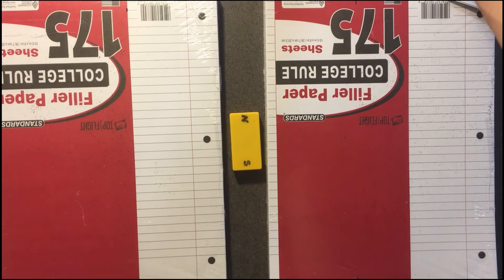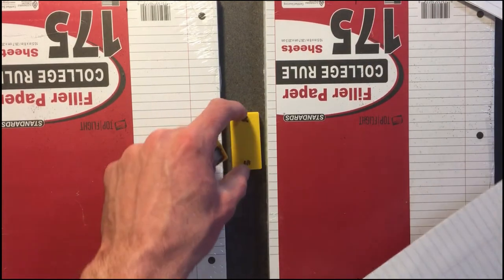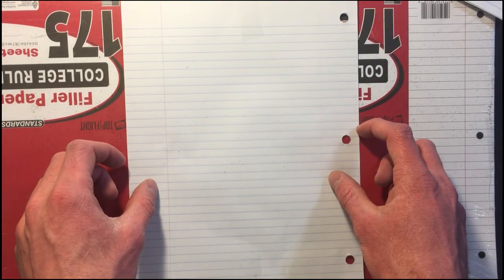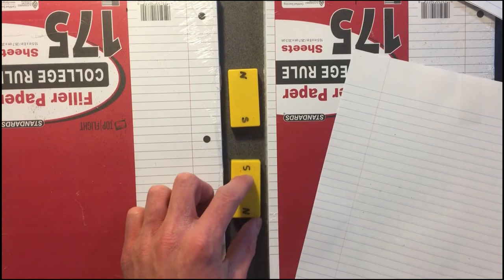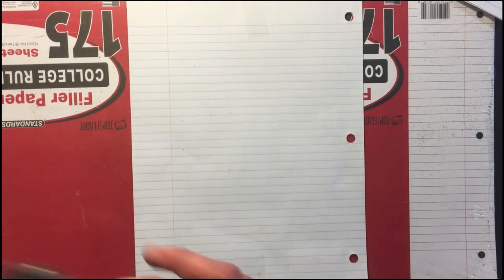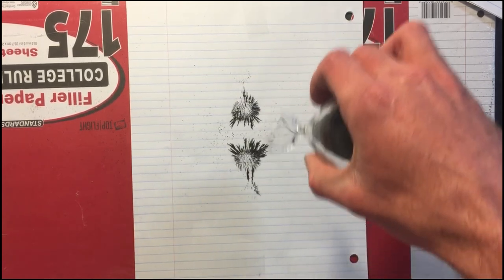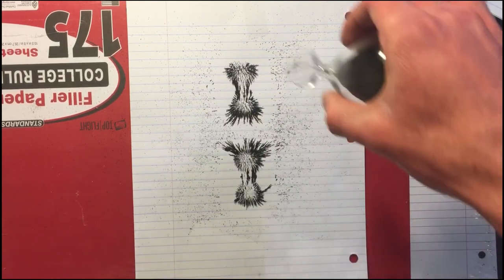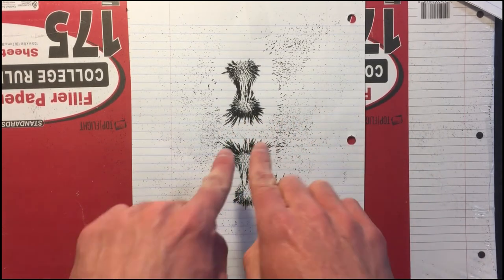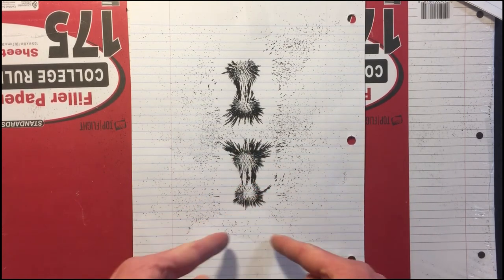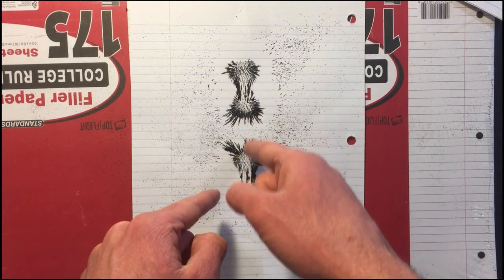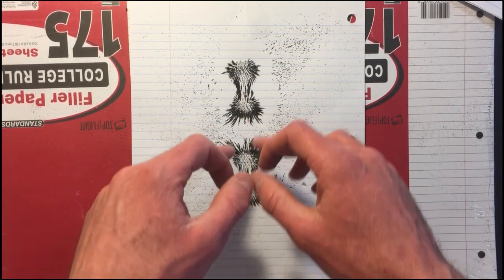I'm going to do one last demonstration and show what happens when iron filings are placed with two magnets. I'll start with the south end close to the south end, so they're repelling each other underneath. You can see the magnetic fields of these two magnets going out and around, but there's no continuance between them — the magnetic fields repel each other. The field goes out from the north into the south on each magnet separately, and there are no iron filings connecting one end to the other.